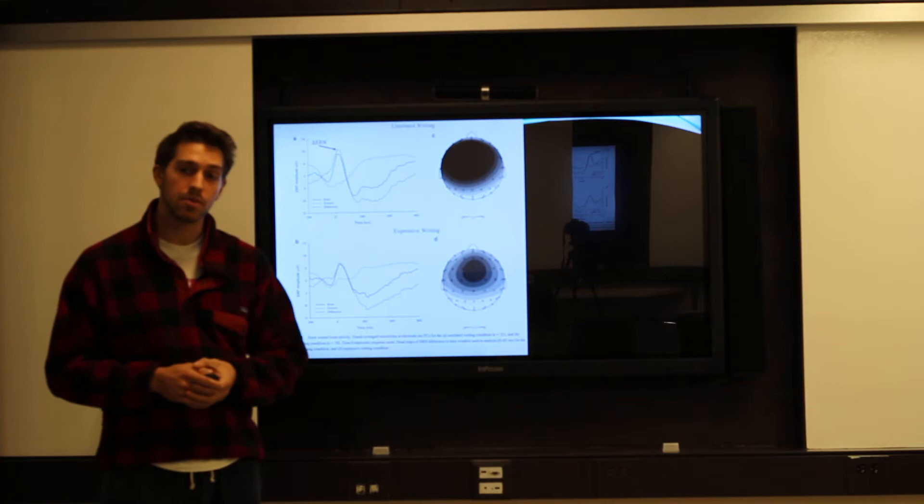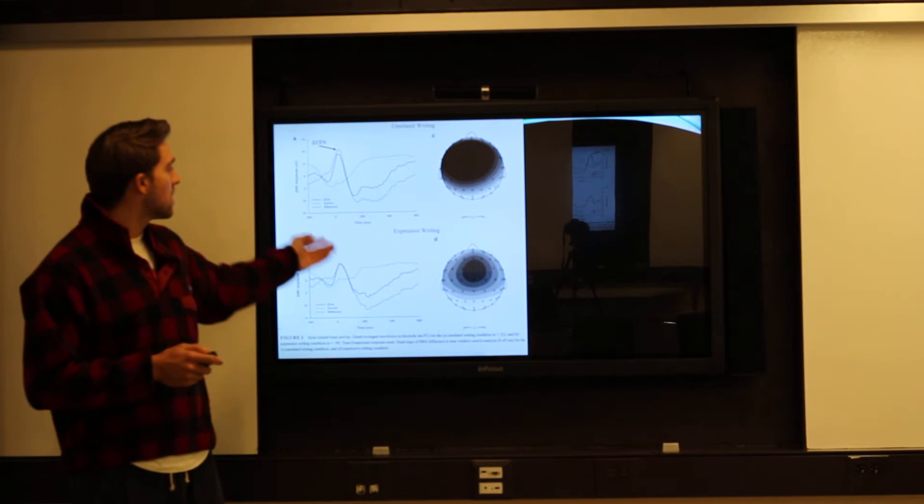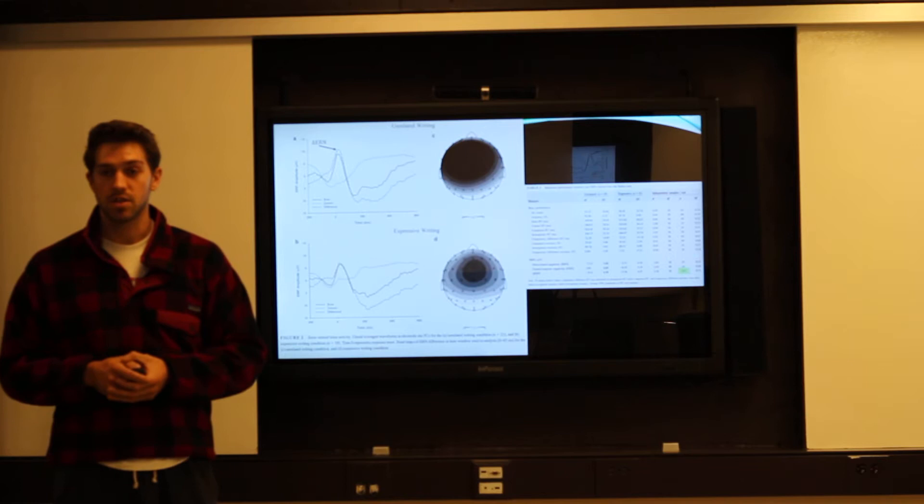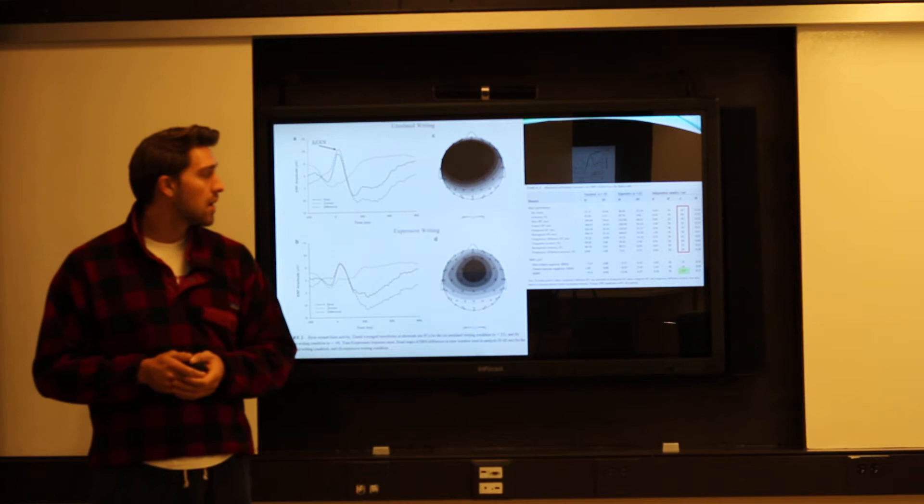Finally, in line with the researcher's hypothesis, they found that the ERP responses were overall tempered for those who were in the expressive writing condition. This graph on the left demonstrates the ERP response to the correct and incorrect answers, as well as the difference between the two. The delta between correct-related negativity and error-related negativity was found to be significantly lower in the expressive writing condition than in the control condition, indicating that expressive writing can be used as an effective treatment to reduce ERN levels in subjects with GAD.